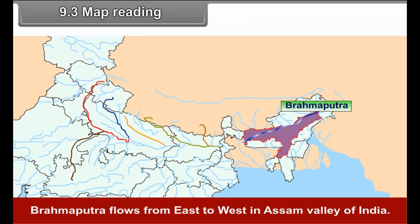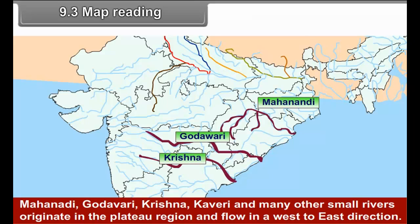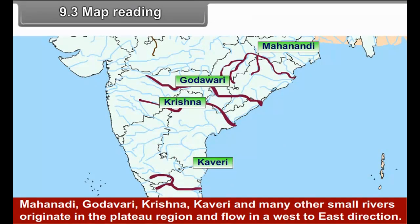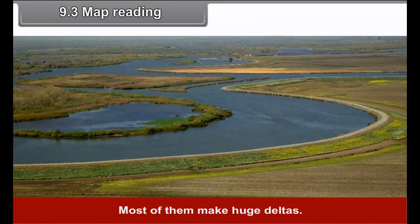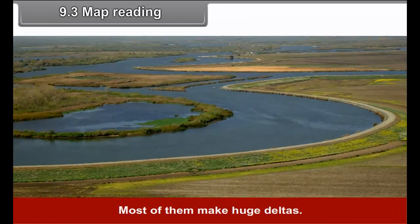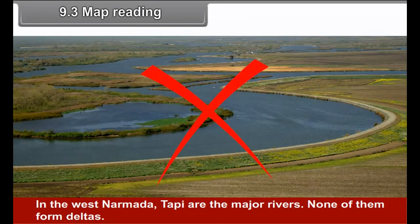There are many river systems in India. Himalayan rivers, Ravi, Beas and Sutlej, etc. flow towards the west towards Pakistan. The Ganga system has Gomati, Ghaghra, Gandak tributaries from the north and Yamuna and Son join the Ganga from the south. Brahmaputra flows from east to west in Assam Valley of India.